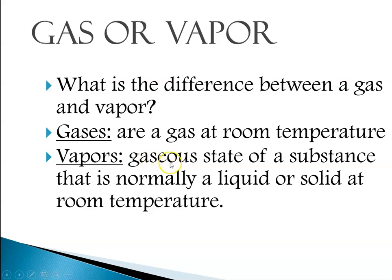Vapors are the gas state of a substance that is normally a liquid or solid at room temperature. So oxygen and hydrogen are elements that are gases at room temperature, whereas mercury vapor is called that because at room temperature mercury is a liquid. A sodium vapor lamp is called that because sodium is a solid at room temperature. So if you are not a gas at room temperature, your gas phase or gas state is referred to as a vapor. We talk about water vapor because at room temperature water is a liquid.